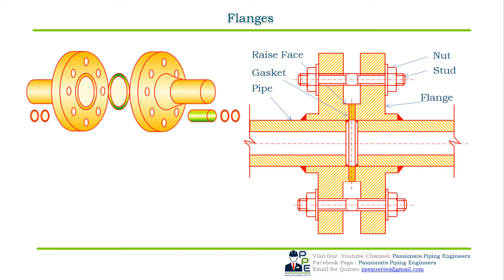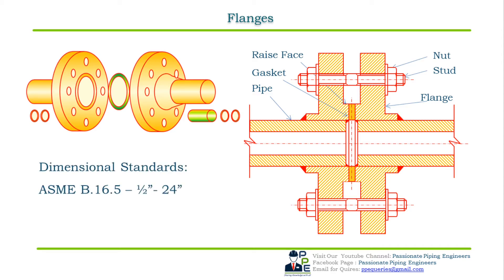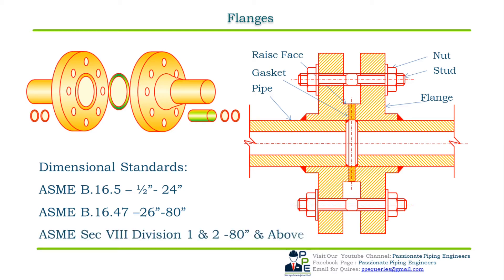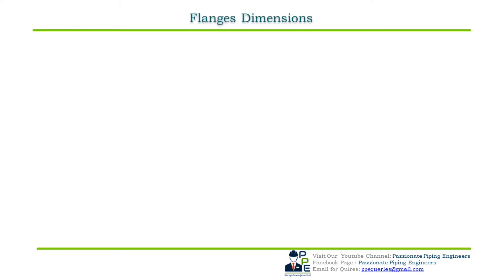Flange joints are made by bolting together two flanges with a gasket between them to provide a seal for a leak-proof joint, as shown in the adjacent figure which shows the cross-sectional view of the flange joint assembly with gaskets and stud bolts. Dimensional standards for flanges are ASME B16.5 for sizes from 0.5 inch NPS to 24 inch NPS, ASME B16.47 for sizes from 26 inch NPS to 80 inch NPS, and ASME Section 8 Division 1 and 2 for sizes 80 inch NPS and above.